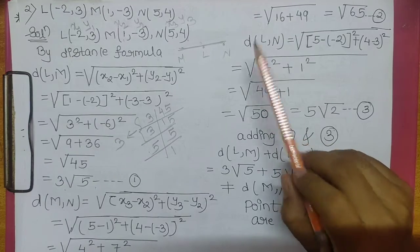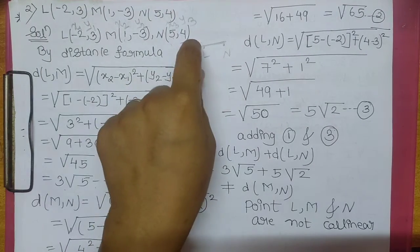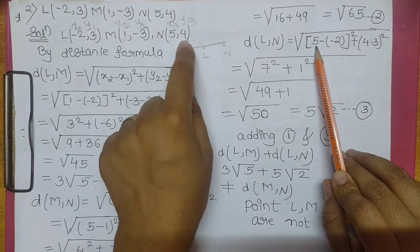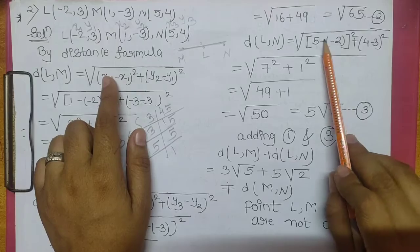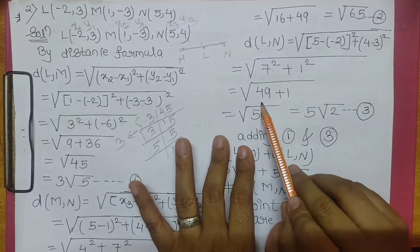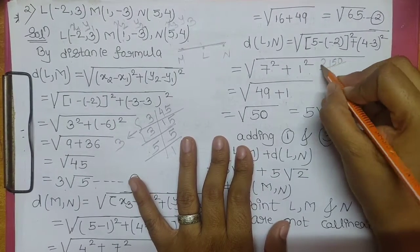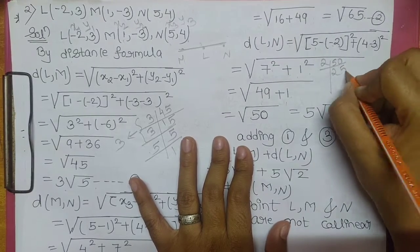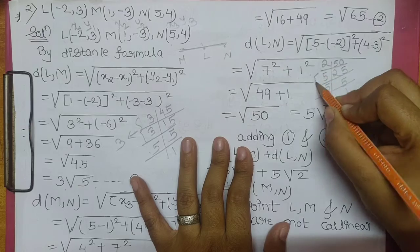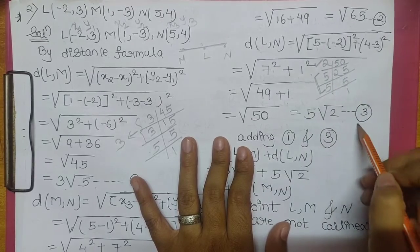We will find distance of LN. Formula: square root of (x3 minus x1) ka square plus (y3 minus y1) ka square. x3 = 5, x1 = minus 2, so minus minus plus: 5 plus 2 = 7. y3 = 4, y1 = 3, so 4 minus 3 = 1. 7 ka square 49, 1 ka square 1. 49 plus 1 = 50. Square root of 50 = 5 root 2.